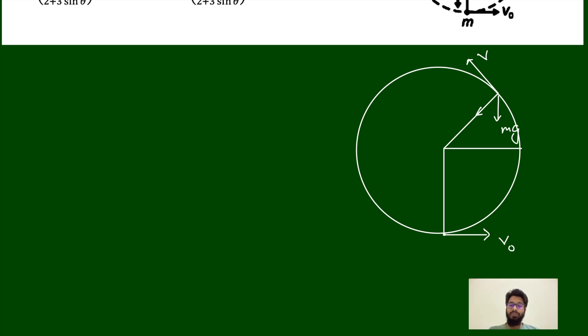Now, mv square by r - this is centrifugal force mv square by r. You can see here mv square by r, the net force must be zero, or you can say tension will be zero. The tension T is equal to zero.